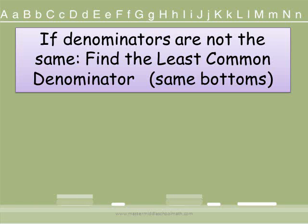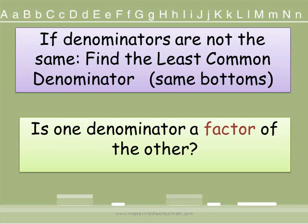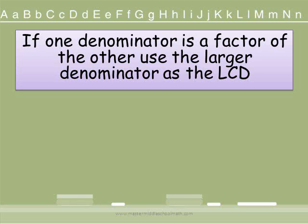If the denominators are not the same, you need to find a common denominator — and you want to find the least common denominator because that will make your work easier. Ask yourself, is one denominator a factor of the other? A factor is a number that when you multiply it with another number it gives you a product. For example, 2 and 3 are both factors of 6 because 2 times 3 equals 6. If one denominator is a factor of the other, use the larger denominator as your least common denominator — it saves you some work.